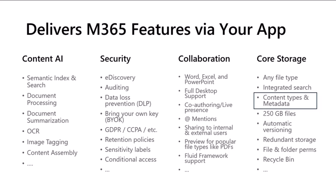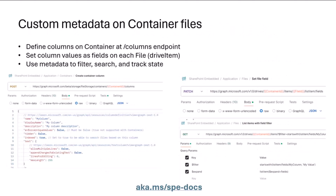So how you can define a schema on the files you're going to store in a particular container, how you can set those fields on those files, and how you can use that data. A container is almost like a document library in SharePoint — it's a place to put files. These are some of the new capabilities we've shipped in the last month. We're still in public preview with SharePoint Embedded, but we're constantly putting out new features, including the ability to define a schema on a container and to set those fields for the files in that container.